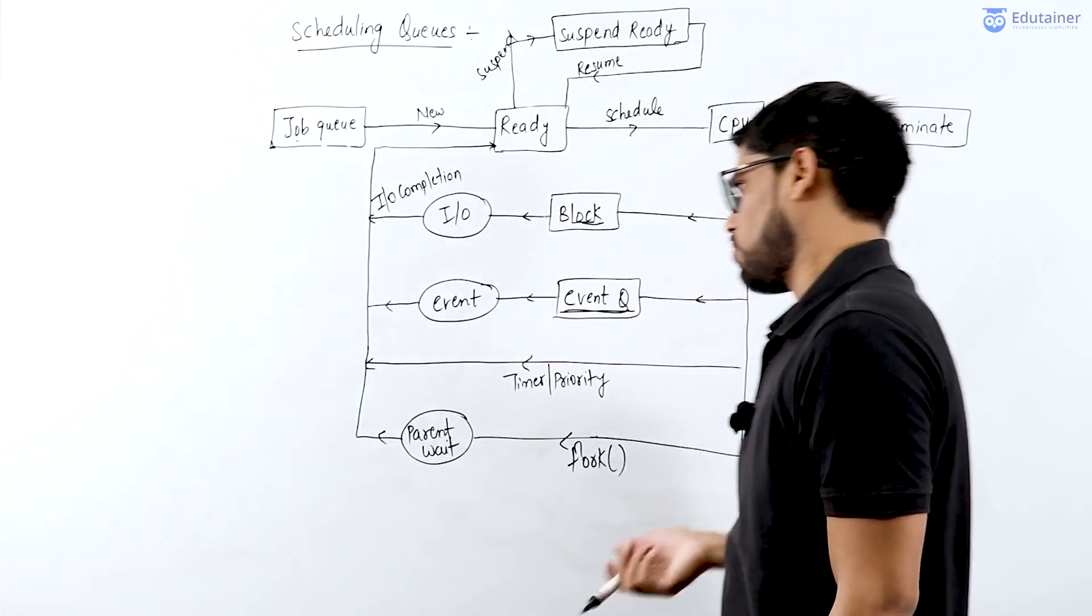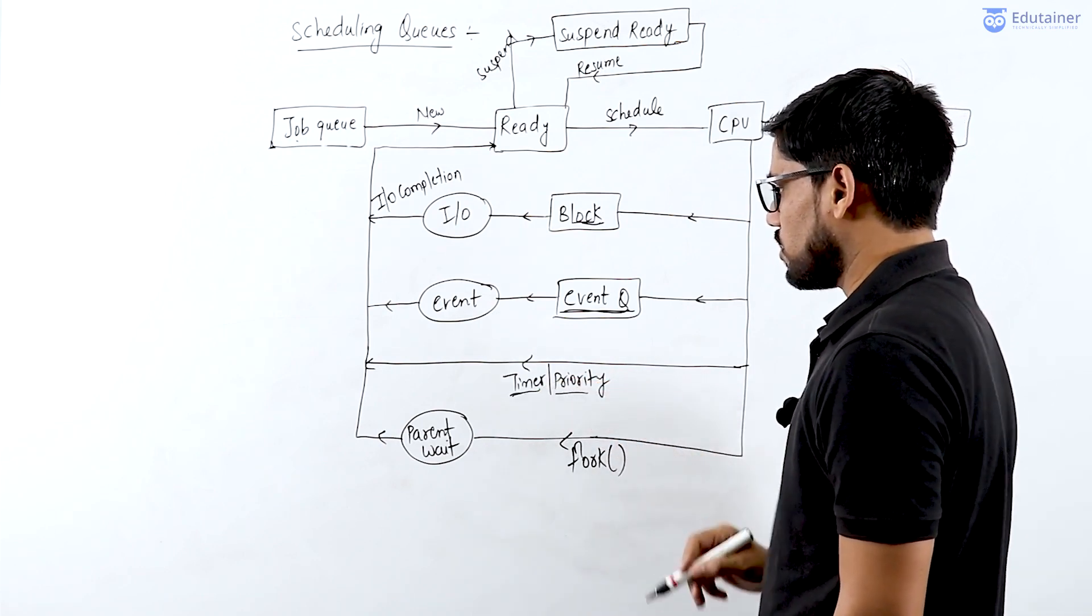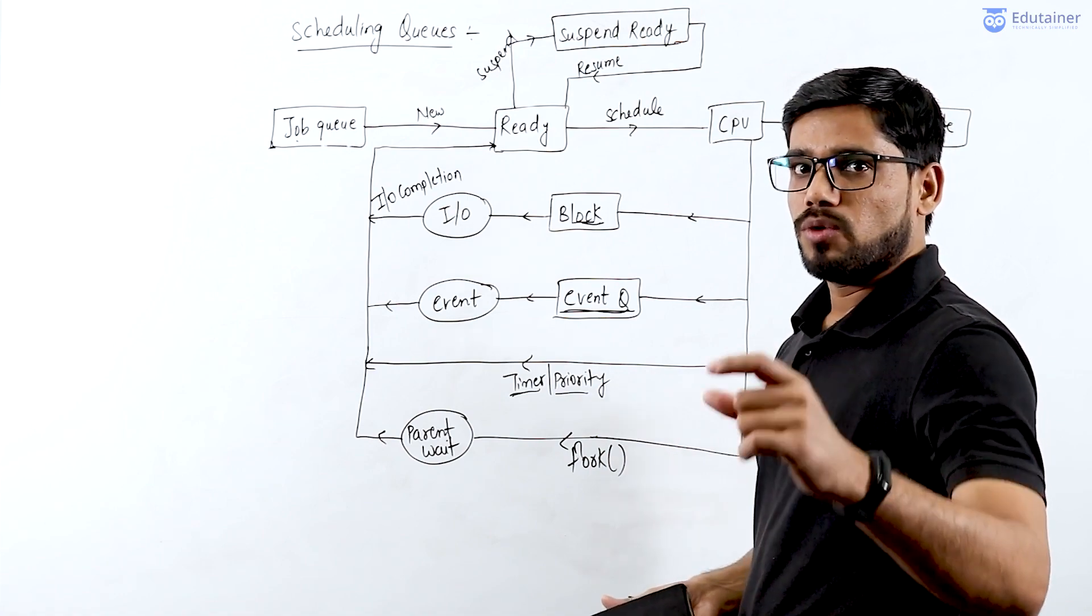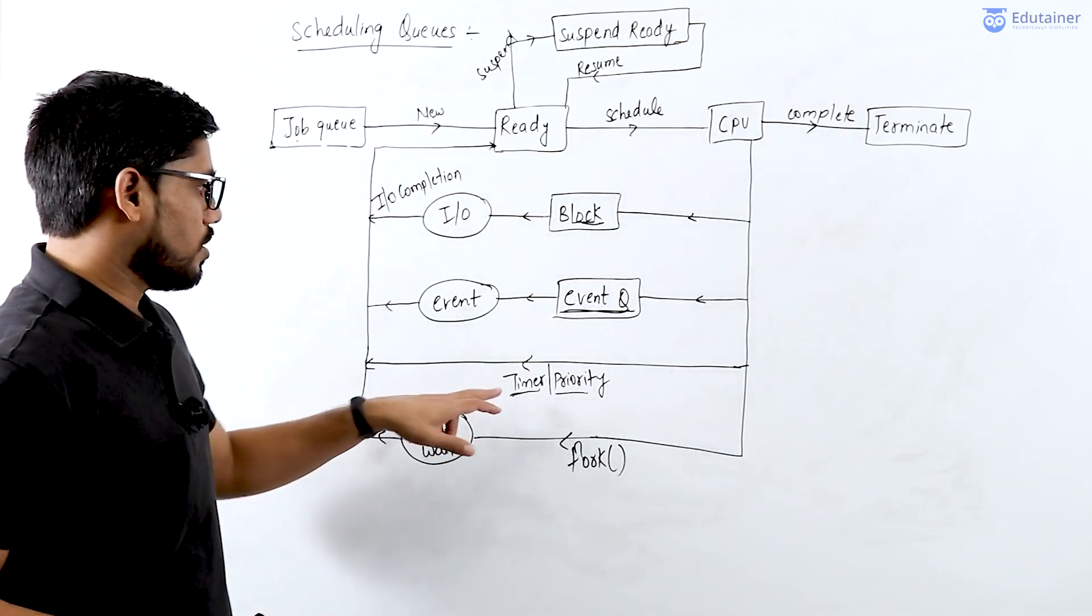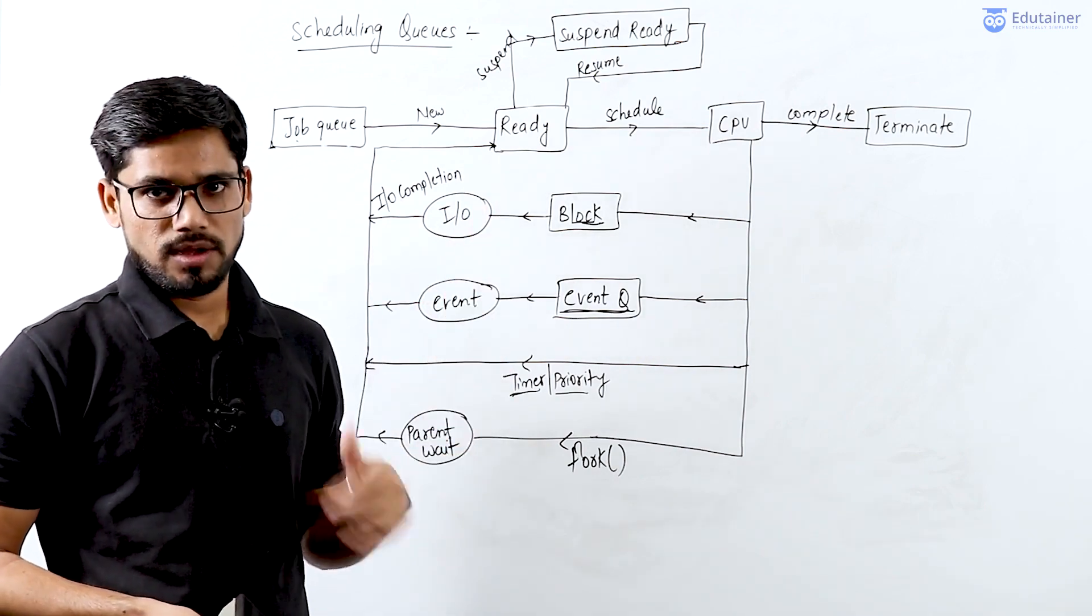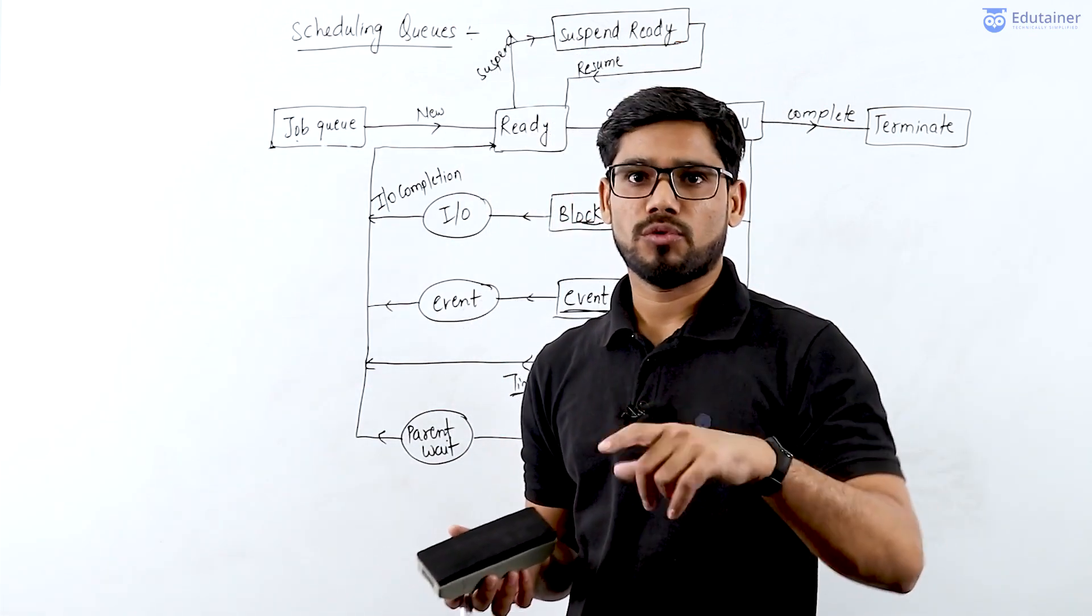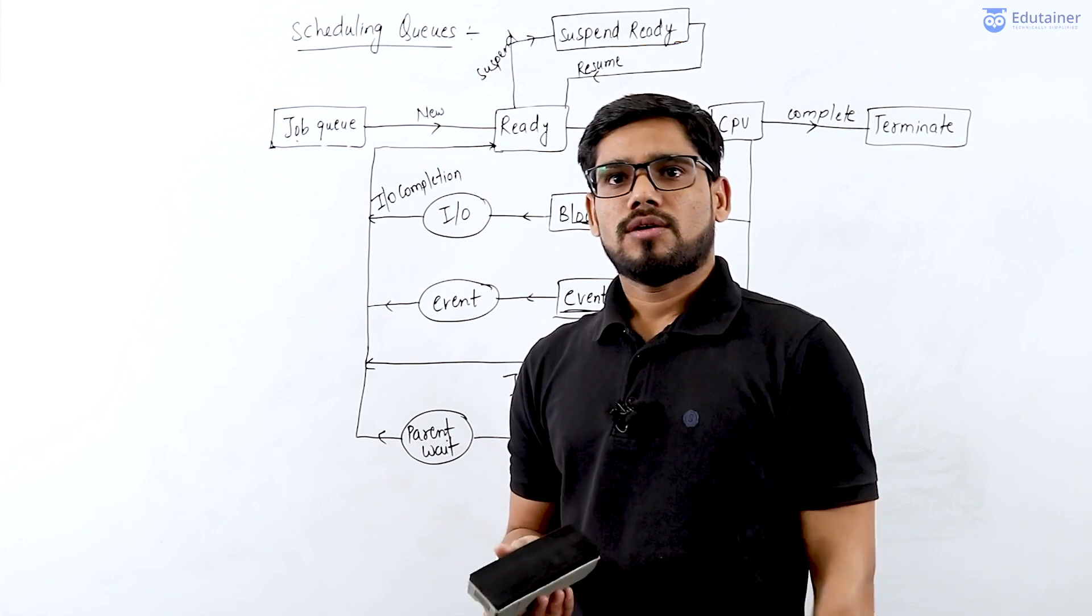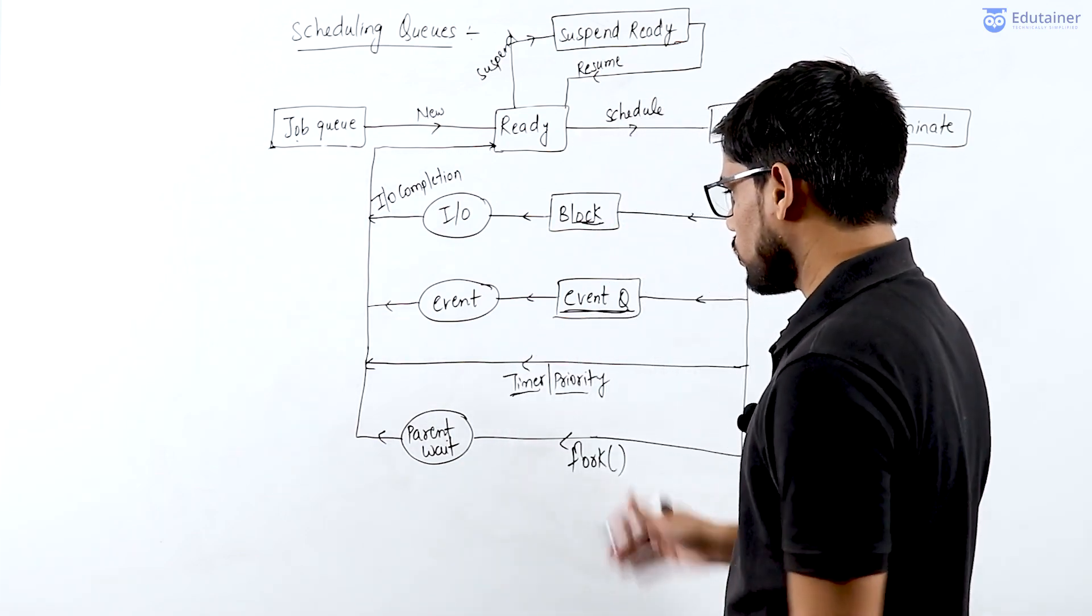The next one is timer or priority. Sometimes a CPU scheduling algorithm itself decides the time for which it runs a particular process. For example, round robin algorithm decides how much time will be allocated for each process. If a process might want 10 units of time, but round robin decides to give 4 units to each process, then after 4 units the running process will be forcefully removed from the CPU and wait for their next chance.